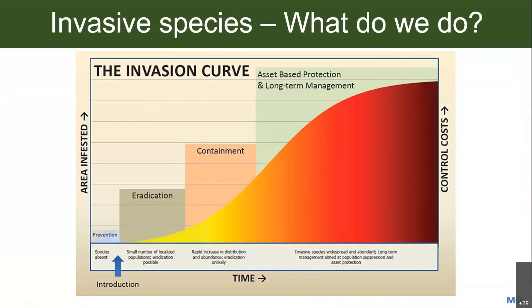Invasive species cause a lot of problems across the world and in New York. A lot of management strategy depends on where a species falls on this invasion curve. In the early stages of an invasion — where maybe the species isn't here yet or has started in little clumps — it is still possible to control or eradicate it. As it covers more area, it's much harder to manage. To understand where it falls on this curve, we really need up-to-date information on invasive species distributions.